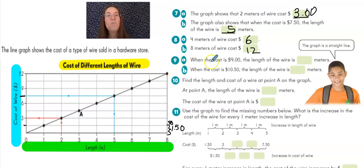Question nine asks, when the cost is nine dollars, the length of the wire is blank meters. I'm tracing it over to where it intersects and dropping down to find that equals six meters. When the cost is ten dollars and fifty cents, the length of the wire is blank meters.